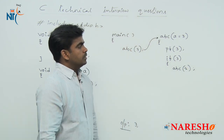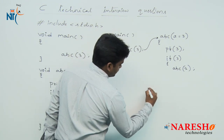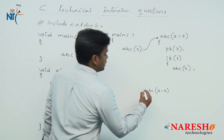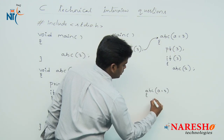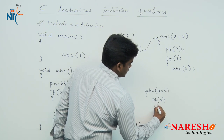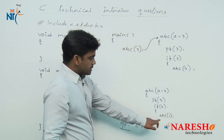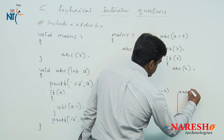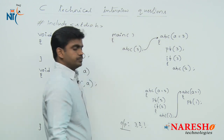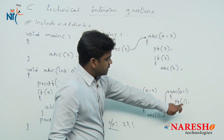We are passing 2, so next the abc function executes with a equals 2. It follows the same pattern: printf prints the value 2, so 2 is printed. Again it checks the condition — if 2 is true, it calls abc(2 minus 1), which is 1. So abc executes again with a equals 1. Inside, it prints the value 1, so 1 is printed.